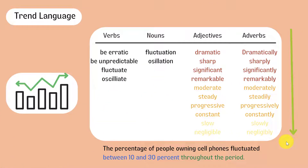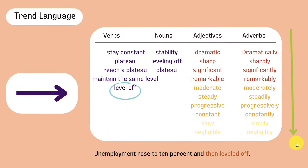When you are describing fluctuations, you should identify the size of fluctuations and how long they lasted. Look at the example: 'The percentage of people owning cell phones fluctuated between 10 and 30 percent throughout the period.' Also, be aware that 'leveled off' is always used after another trend. Here is a sample sentence: 'Unemployment rose to 10 percent and then leveled off.' So don't ever use 'leveled off' to start your description.